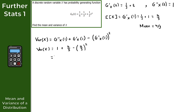Putting this into the calculator: 1 plus 4 over 3 minus 4 over 3 squared gives us 5 over 9. So the variance of our random variable x is equal to 5 over 9. That gives us the solution to question 1.